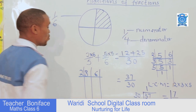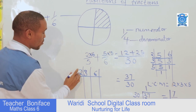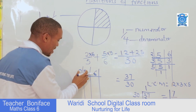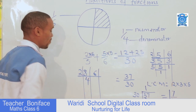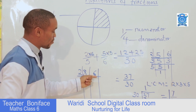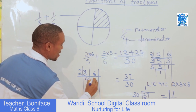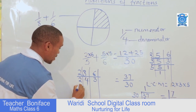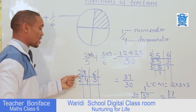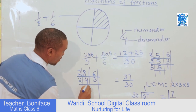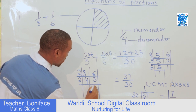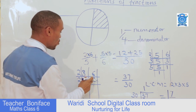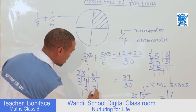We start by two, the least number we can divide. How many times does two go into eight? That is four. How many times does two go into six? That is three. Since four is an even number, you can still use two again. How many times does two go into four? That is two. How many times does two go into three? It's impossible, so we retain it as three.